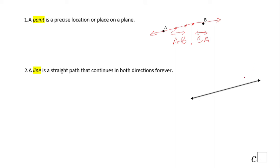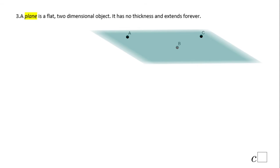You see here another line. Sometimes we call a line just using a letter, like line L or M. Now here you see three points and something that looks like a piece of paper — a flat surface — that is called a plane. It's a two-dimensional object, it has no thickness, and it goes forever. In this plane, as you notice, we can draw lines. For example, here we have line AB, and we can have other points and draw another line. There are an infinity of lines you can draw in a plane.